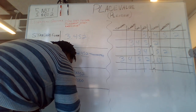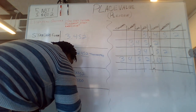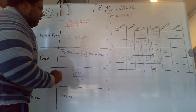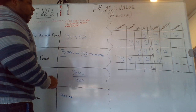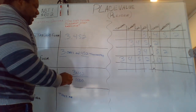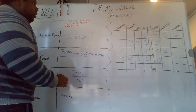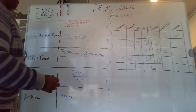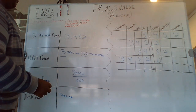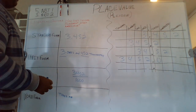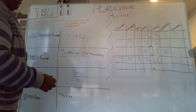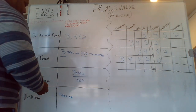Notice that for the decimal, I'm not writing 'three decimal point' — I'm writing 'three and.' Because when we say the number in standard form, it's not 'three decimal point four hundred fifty-two thousandths.' It's 'three and four hundred fifty-two thousandths.'